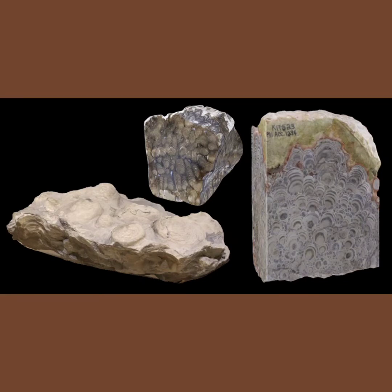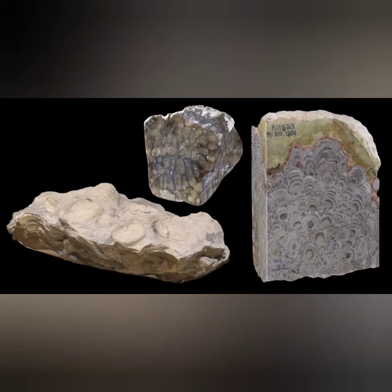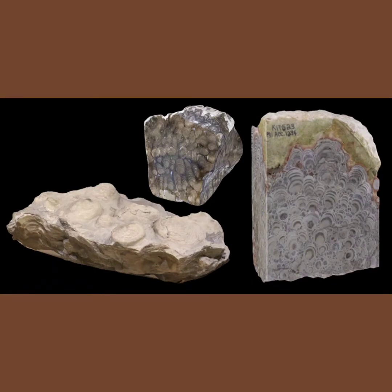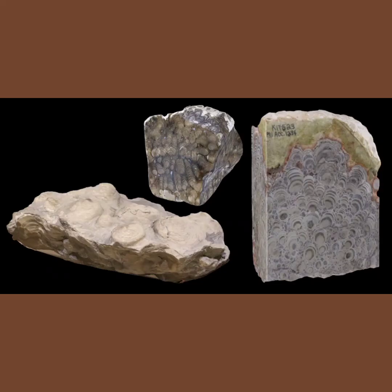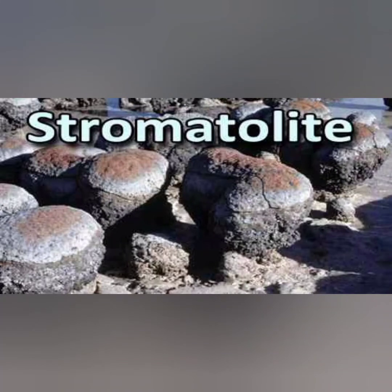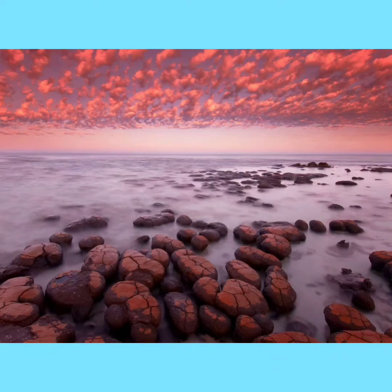At the start of the Archean Eon, Earth did not have free oxygen. Water molecules had oxygen, but it was bonded with hydrogen. Earth's atmosphere was mostly methane and nitrogen. In such an atmosphere, only cyanobacteria existed. These microscopic cyanobacteria converted sunlight into energy — they carried out photosynthesis in the oceans, metabolizing their own food. As a waste product, cyanobacteria released oxygen. Over time, free oxygen built up in the oceans into banded iron formation.